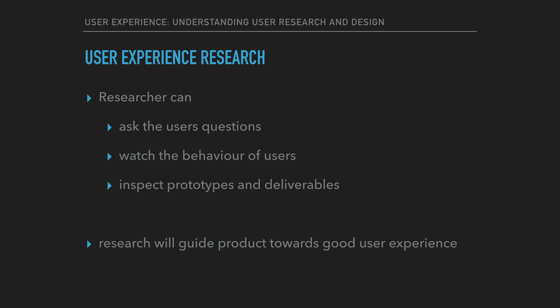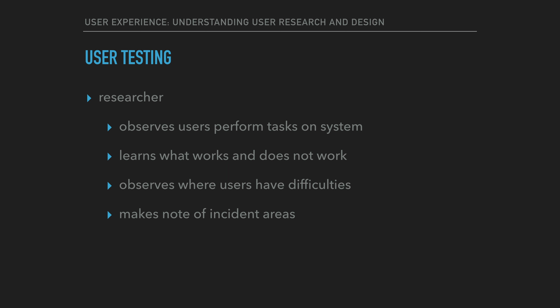These types of research methods will assist the designer to guide the products towards a good user experience. One of the main methods of UX research is user testing. As part of user testing, the researcher observes a representative set of users' attempts to perform tasks on the system they are evaluating. Through observation, the researcher is able to learn what works about the system and what does not work. The researcher can observe where the users have difficulties and make notes of incident areas.